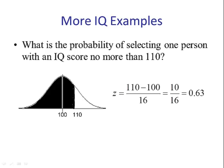Next step, we change 110 to a z-score, 0.63. We look up 0.63 in table 5, and we see that the probability that z is less than 0.63 is 0.7357. And this agrees with our picture. We knew that the answer had to be more than 0.5, and it is.